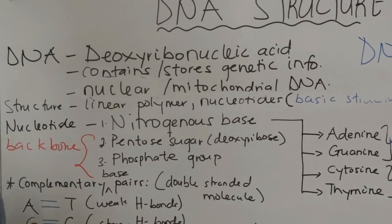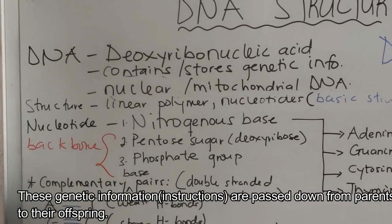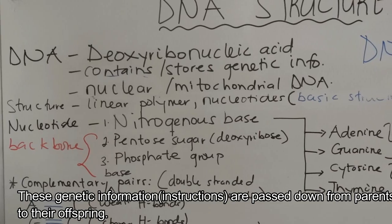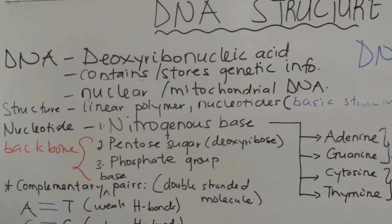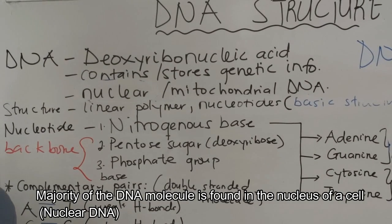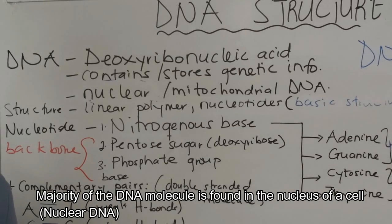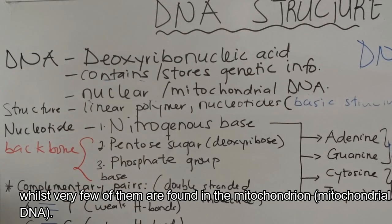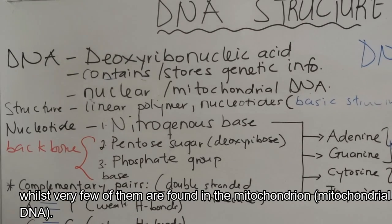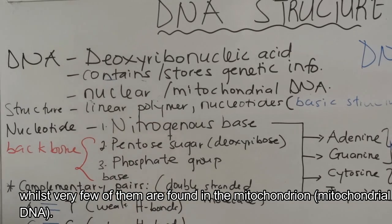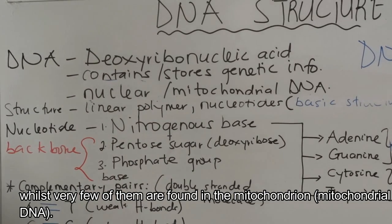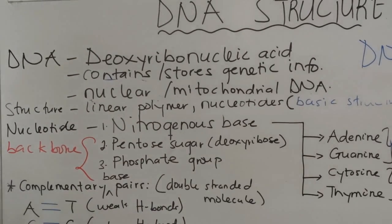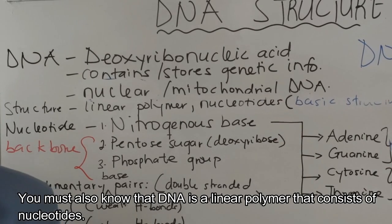DNA contains and stores the genetic information of a cell. This genetic information is passed down from parents to their offspring. The majority of the DNA molecule is found in the nucleus of a cell, so we term that nuclear DNA, whilst very few of them are found in the mitochondria, and that's why we call it mitochondrial DNA.